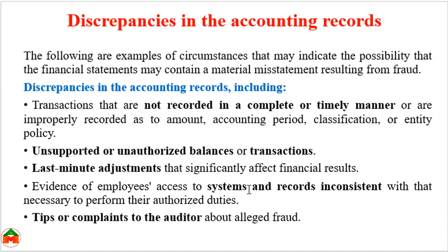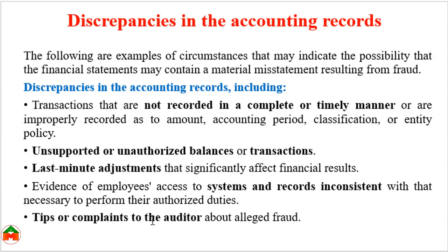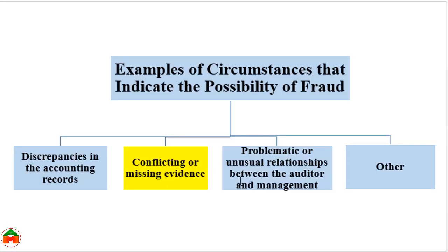The next discrepancy is evidence of employees having access to systems and records inconsistent with what is necessary to perform their authorized duties — whenever there are inconsistencies between duties and records. Additionally, whenever there are tips or complaints to the auditor about alleged fraud, those circumstances also provide an indication of a fraud risk factor.